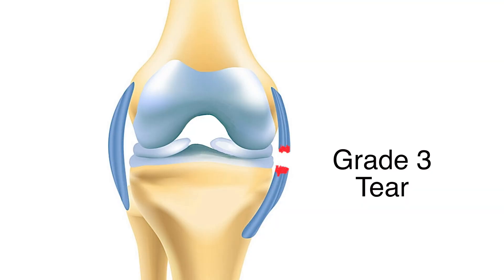In Grade 3 injuries, the majority of the ligament fibres have been torn, and so that ligament is no longer able to function normally and do its job of protecting and limiting excessive joint movement. We call this a ligament rupture. So in a Grade 3 injury, the joint will be unstable, and indeed it's that instability which characterises a Grade 3 injury compared to Grade 1 or Grade 2. A common symptom that the patient often mentions is a popping or snapping sound at the time of injury, which essentially is the noise made as the ligament ruptures.